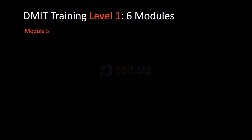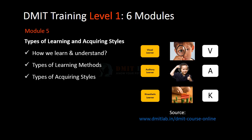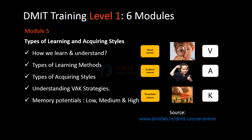In module 5 you will learn types of learning and acquiring styles. In that you will learn how we learn and understand, types of learning methods, types of acquiring styles, understanding the VAK strategies, memory potentials — low, medium and high — and the best learning methods for low memory.